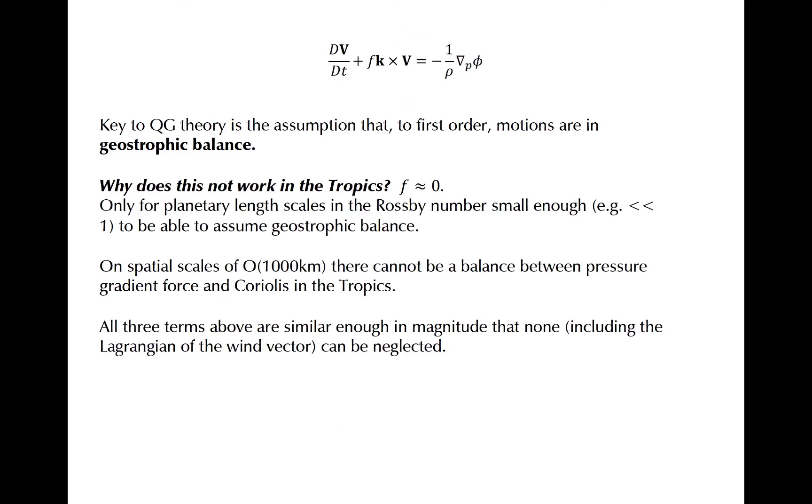Let's look more closely at the momentum equation. We can't assume geostrophic balance because f is approximately zero. Recall that f is proportional to the sine of the latitude, and the sine of zero is zero. Also recall that to be able to assume geostrophic balance, a very small Rossby number, say less than 0.1, is required. The Rossby number is just wind speed divided by f times the length scale, so as f goes to zero, the Rossby number gets big.